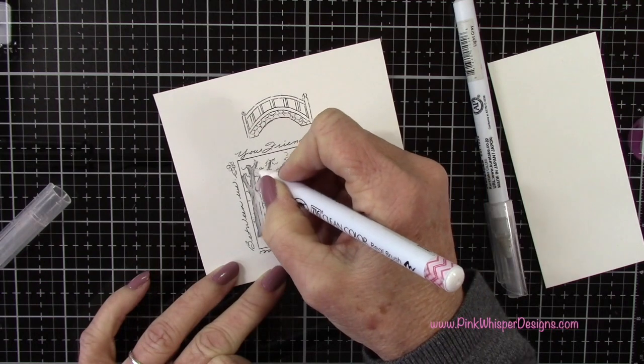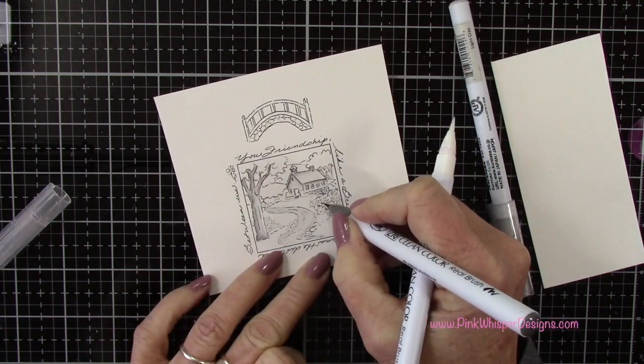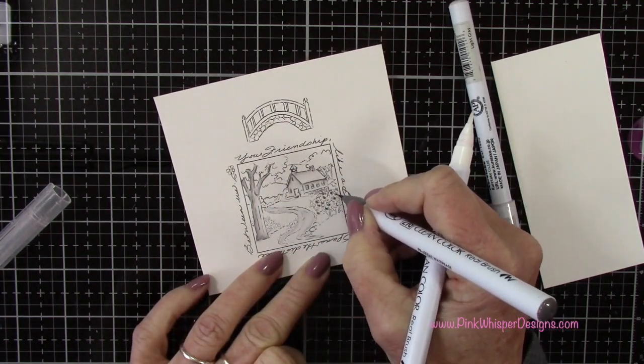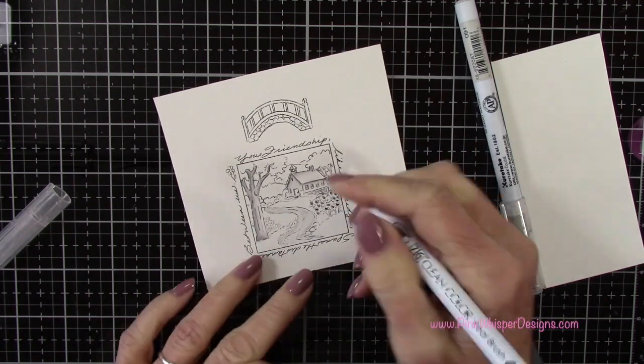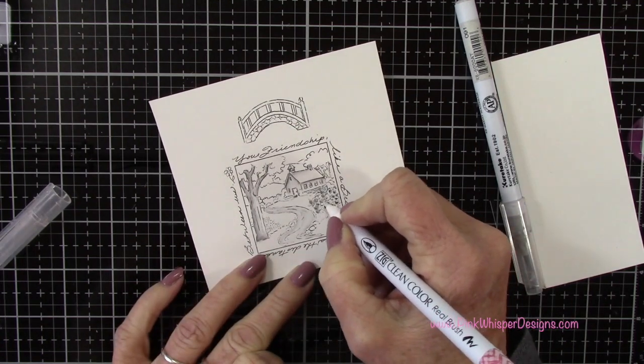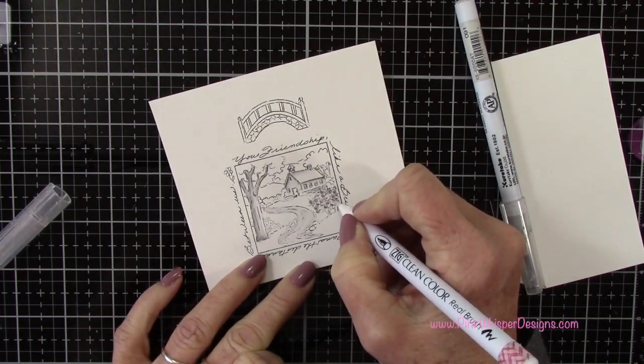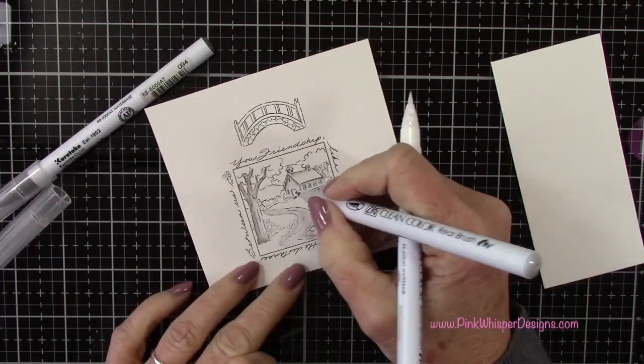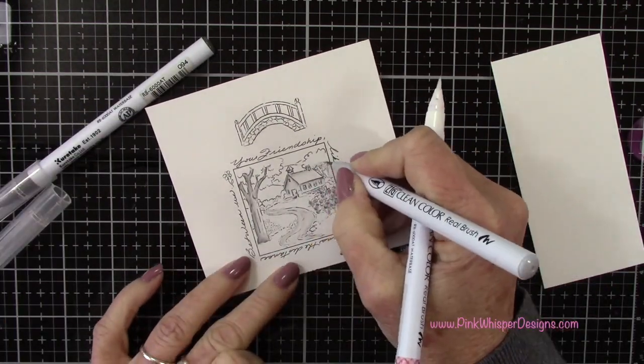Now there are several new shadow box accessory sets available. Those include the boat window accessory set, the mailbox window accessory set, and the deer window accessory set.